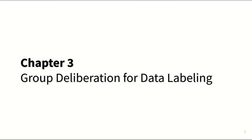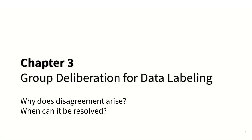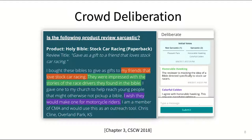Let's look at Chapter 3, where we provide case studies of using group deliberation in data labeling to understand why disagreement arises and when it can be resolved. We started out by exploring group deliberation in the context of microtask crowdsourcing.